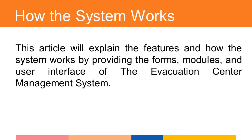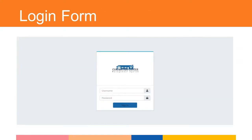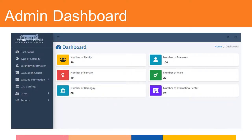This article will explain the features and how the system works by providing the forms, modules, and user interface of the evacuation center management system. This form will be used in logging into the system. The users will set their username and password to access the features and records of the system. This dashboard serves as the home page of the system administrator when logged in, and mainly displays the number of families/households, number of evacuees, and number of male and female evacuees.